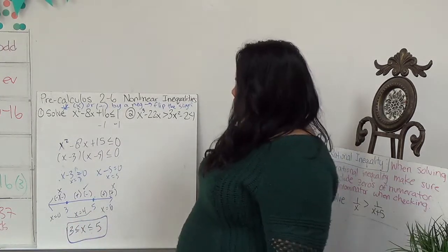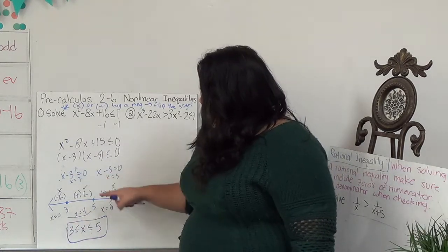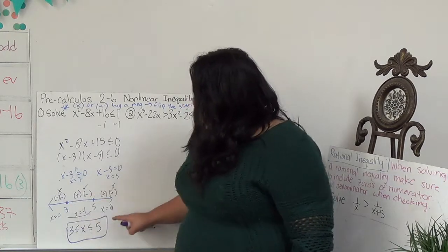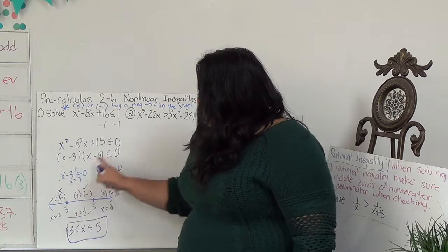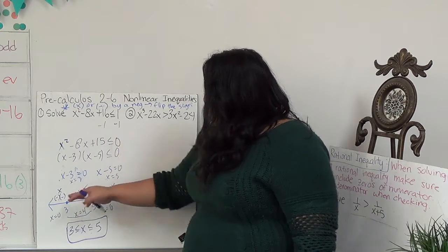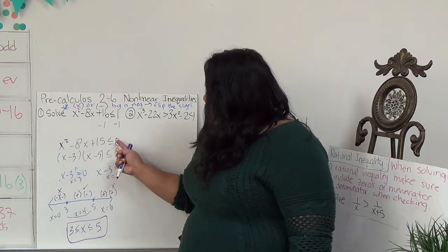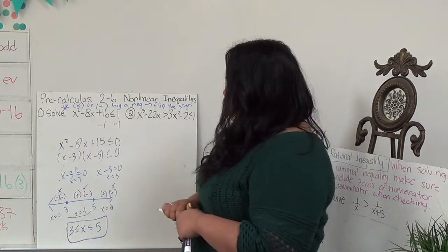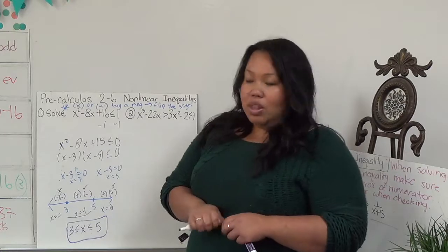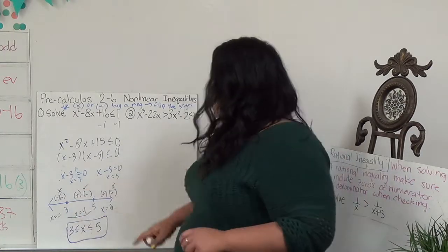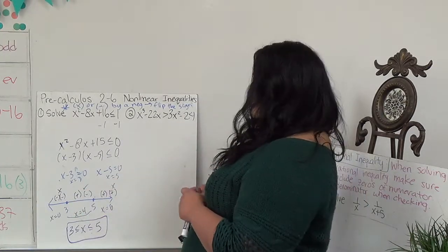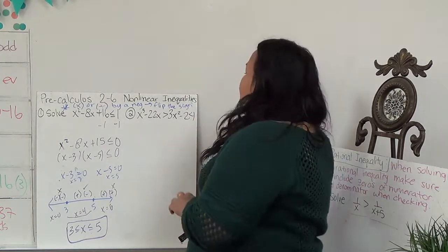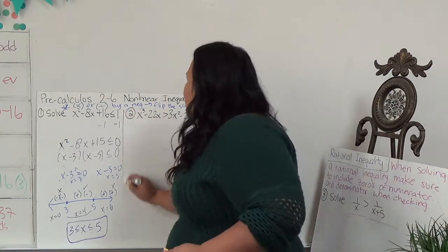To summarize: I make the factors equal to 0 to set my markers, then I test the different parts of the graph. Whichever region gives me a value less than 0 is the answer. If the inequality were the other way, I'd be looking for positive results. Since 0 is on the bigger side here, the expression has to be negative, so only the region between 3 and 5 works.